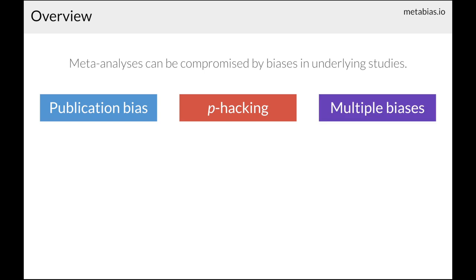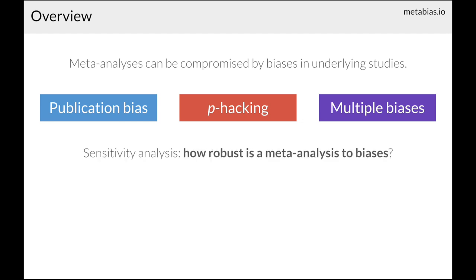And multiple biases operating together, such as when publication bias interacts with the internal bias to studies, such as unmeasured confounding. Many varying methods exist to correct for these biases, but what I'm going to be describing is a complementary approach of conducting a straightforward sensitivity analysis. These analyses let you evaluate how robust a given meta-analysis is to different levels of these biases.